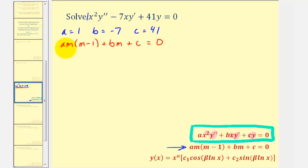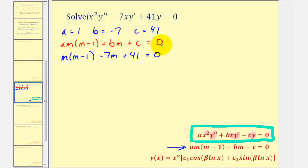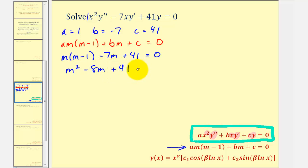Substituting, we have m times the quantity m minus one, then since b is negative seven we subtract seven m, and since c is positive forty-one we add forty-one, equals zero. Clearing the parentheses gives us m squared, then negative m minus seven m equals negative eight m, plus forty-one equals zero.